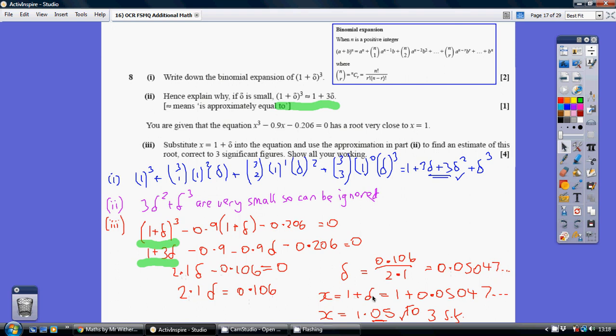Now, x equals 1 plus delta. So x equals 1 plus this, which is 1.05047, which is 1.05 to 3 sig figs.